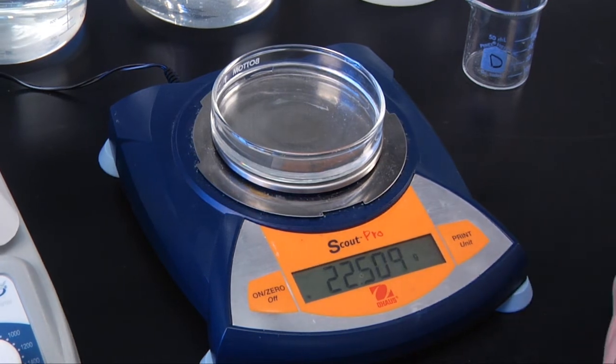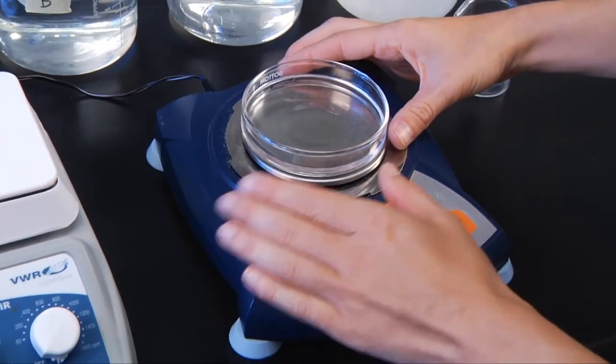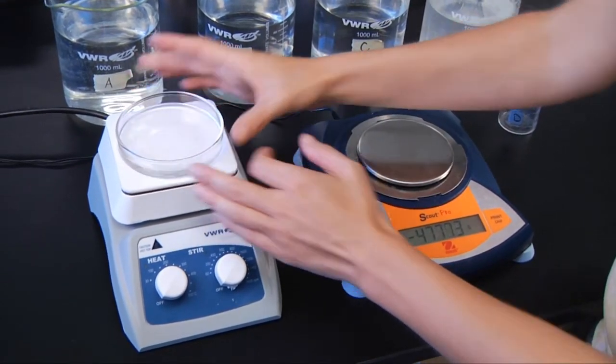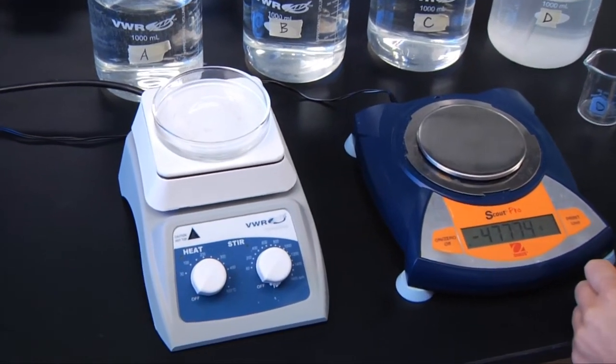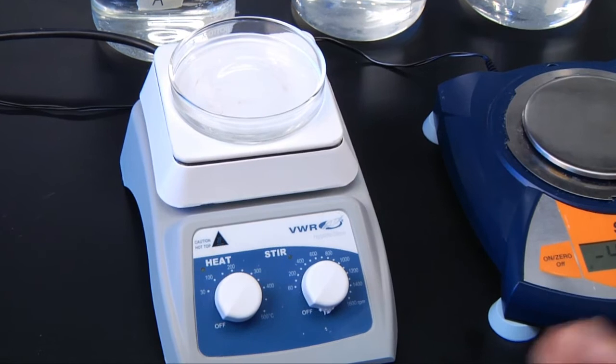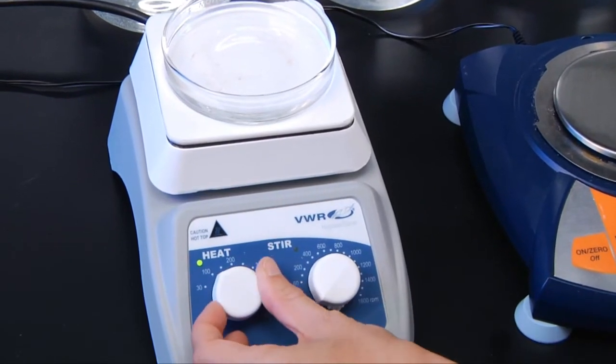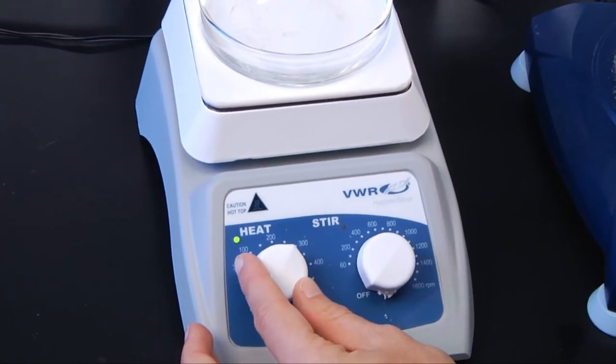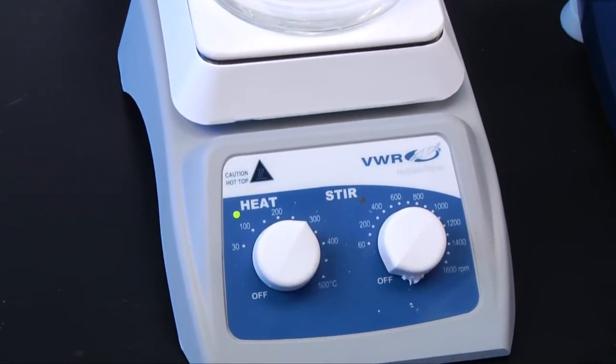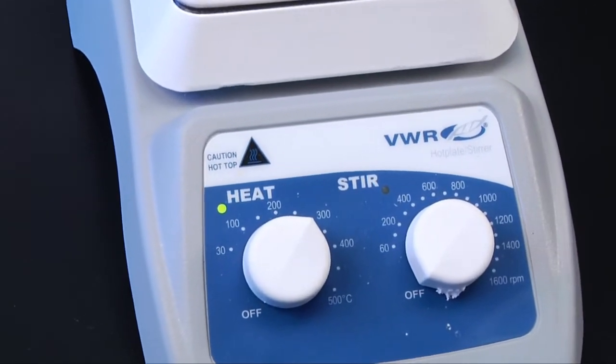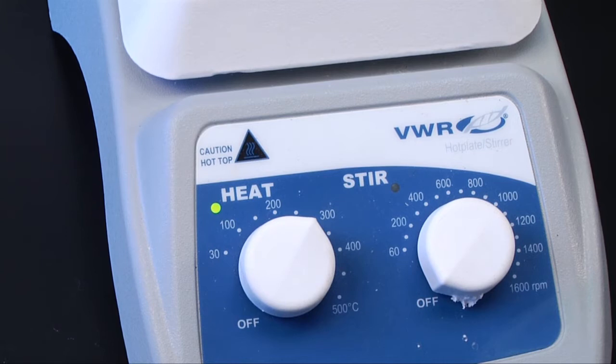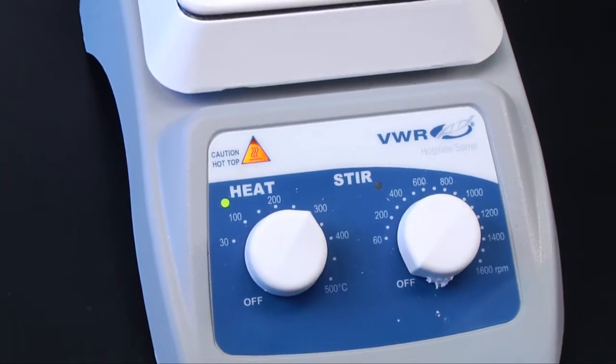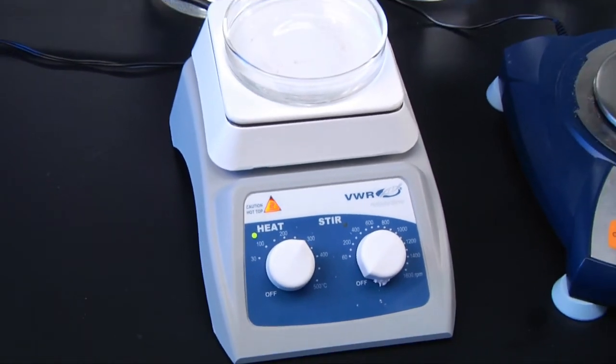Once you get those numbers all set, take your petri dish and we're going to put it over onto the heating plate or the hot plate. It might help also if you want to label your petri dish as well with what sample number you have or letter. Then we're going to turn your heat up. Depending on what type of hot plate you have, I would try to aim for about halfway or 300 degrees Celsius. And then you're going to let it sit. Now it's important not to walk away from this because you could end up with a real nasty mess on your hands. So make sure that someone is keeping an eye on your petri dish.